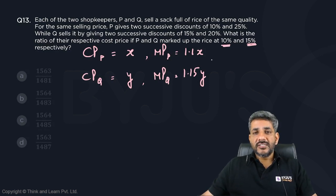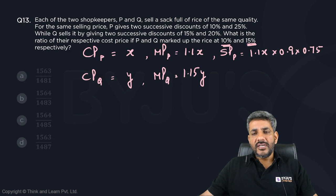P has given two successive discounts of 10% and 25%. So what is the selling price of P? 1.1X is the marked price, first discount of 10% is 0.9, next discount of 25% is 0.75.